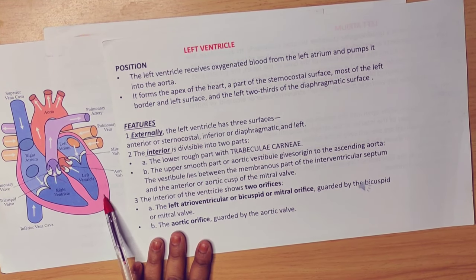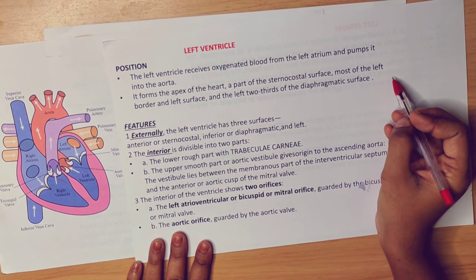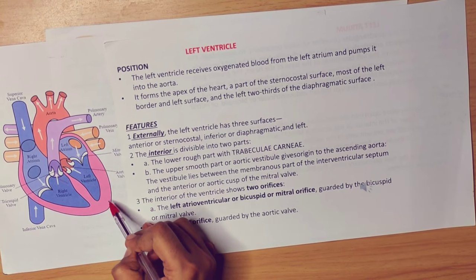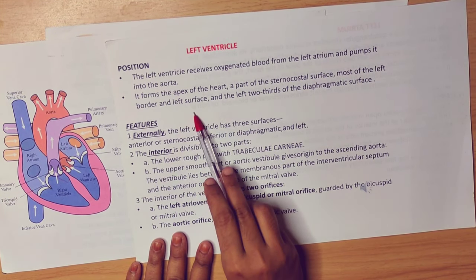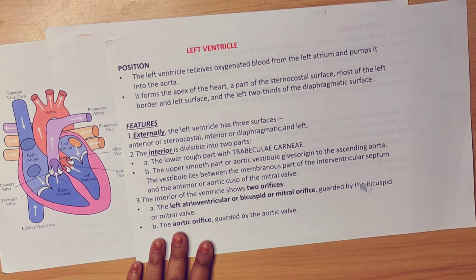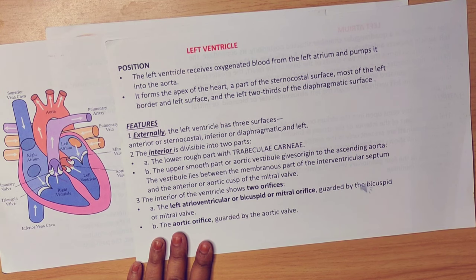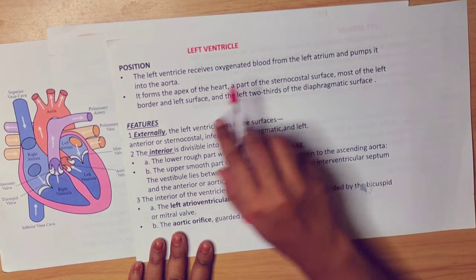The left ventricle also forms the sternocostal surface — that is the anterior surface — most of the left border, the left surface, and two-thirds of the diaphragmatic surface. The diaphragmatic surface is also called the inferior surface because it lies on the diaphragm.